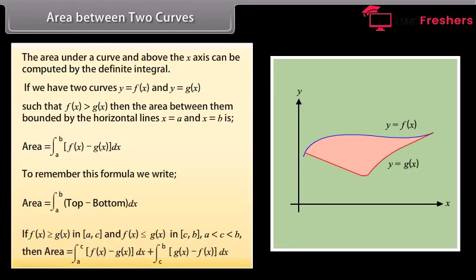If f(x) ≥ g(x) in [A, C] and f(x) ≤ g(x) in [C, B], where A < C < B, then the area is equal to ∫ from A to C of [f(x) − g(x)] dx plus ∫ from C to B of [g(x) − f(x)] dx.